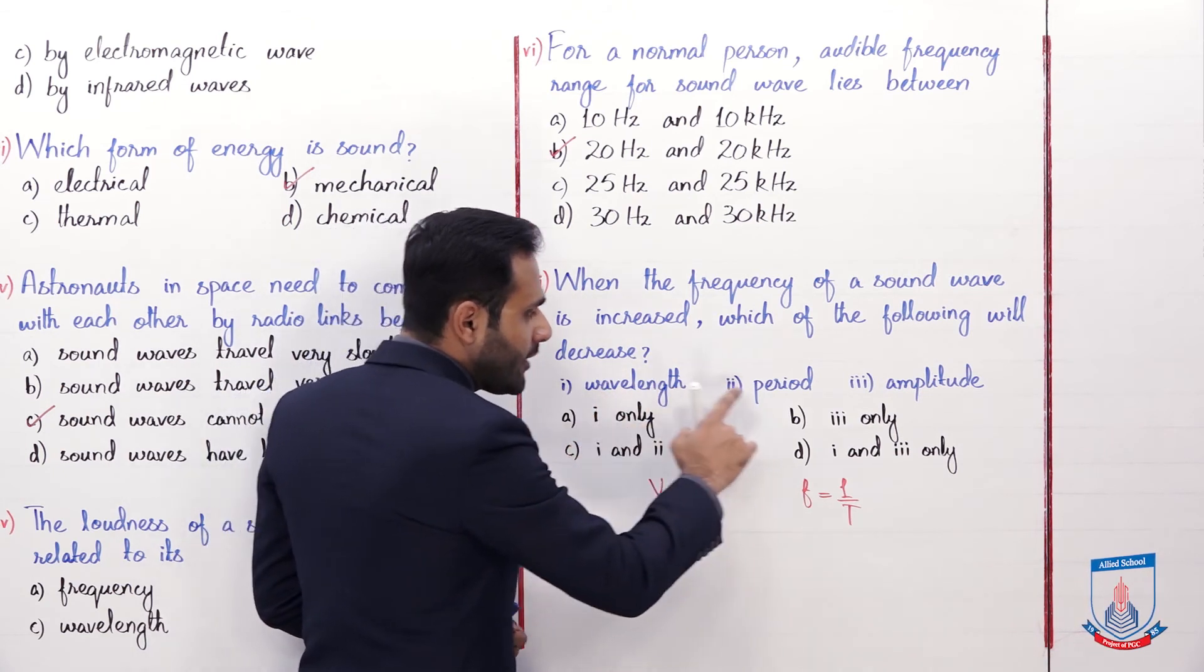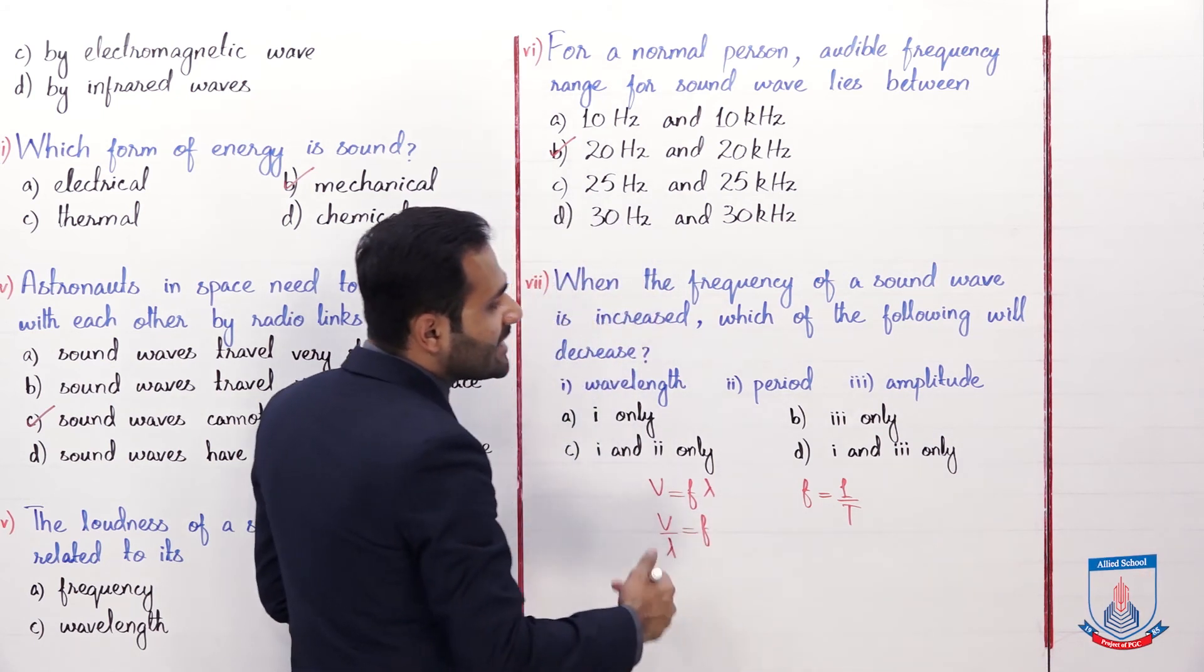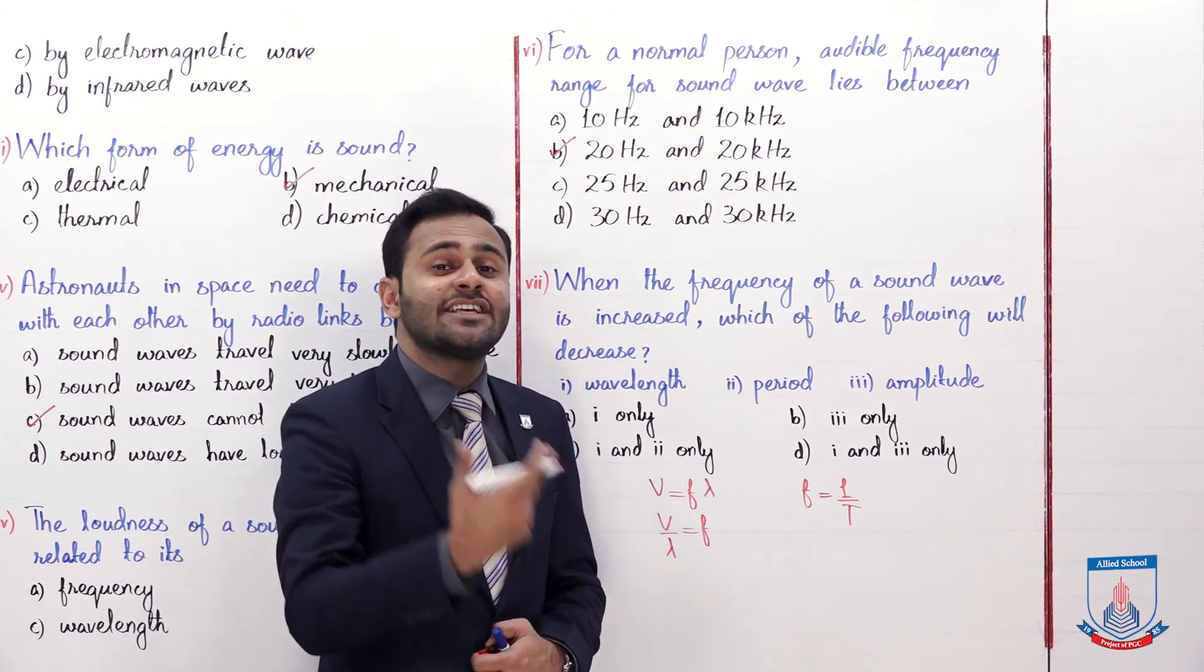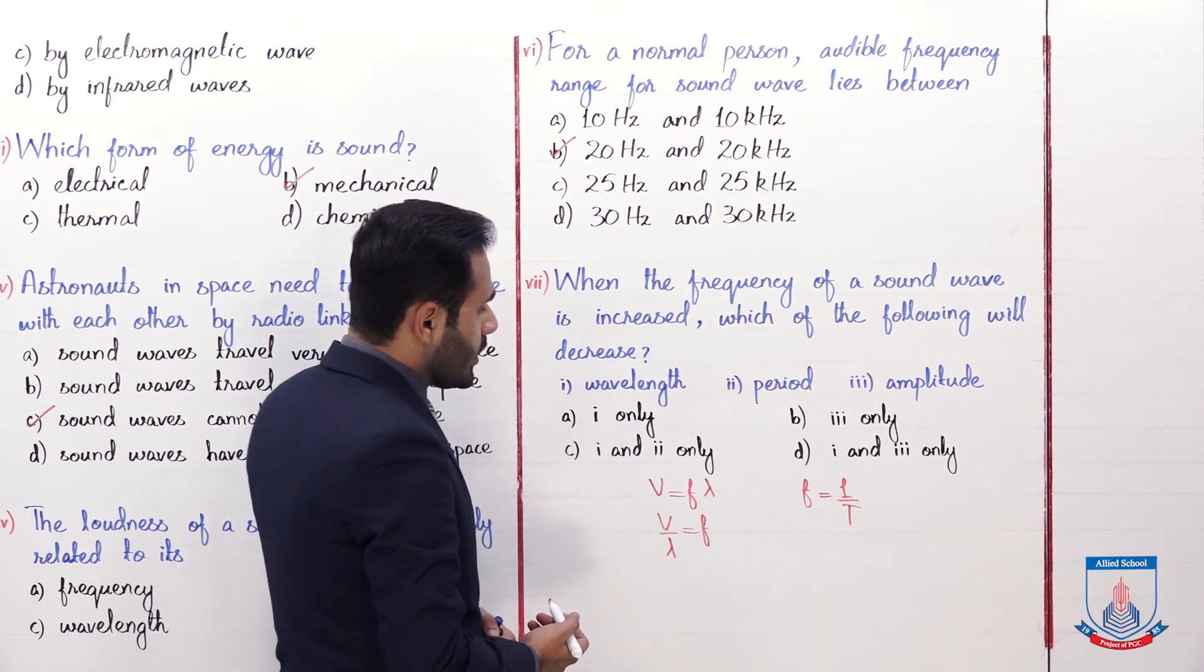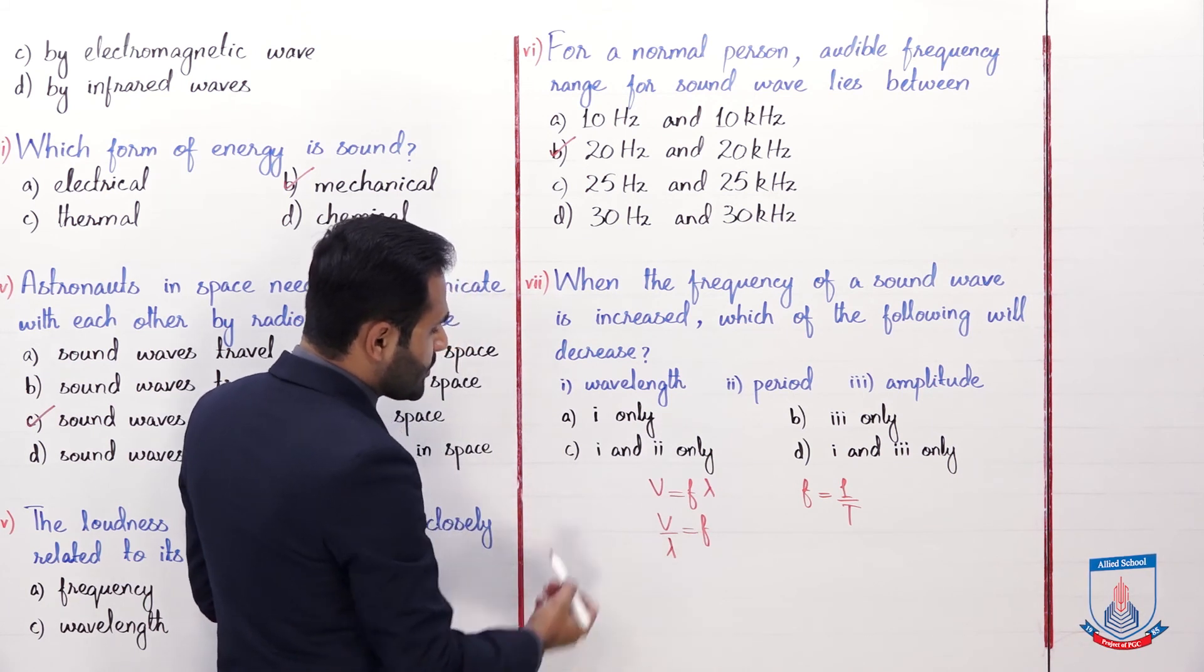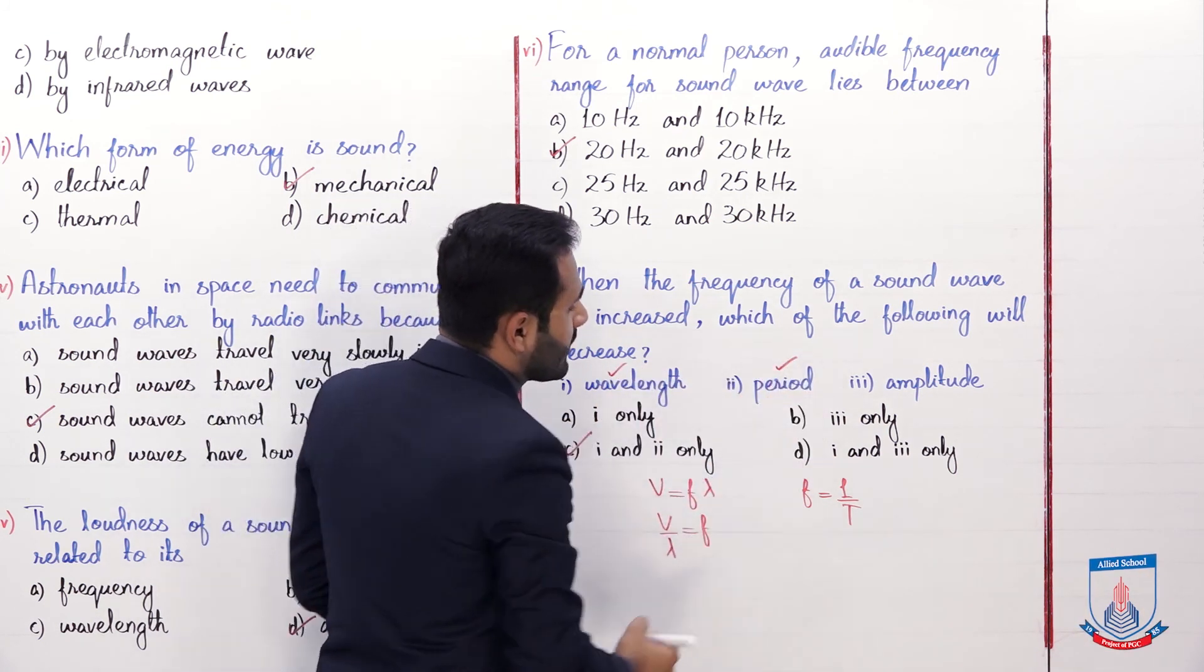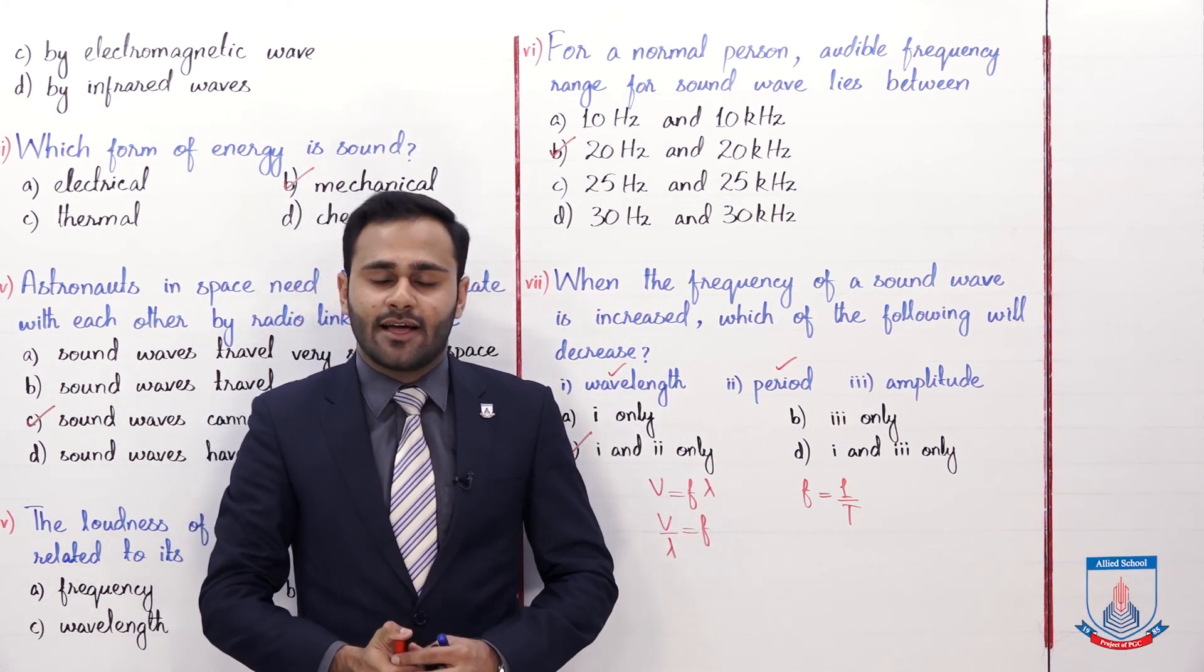So the one and two means that by increasing frequency, wavelength is also decreasing and period is also decreasing. Now if you look at the amplitude, by increasing frequency the amplitude may remain constant or the amplitude may increase. That means amplitude does not decrease. So the options one and two are correct. So if you look at the options, option C is correct because one and two only. So one and two will decrease.